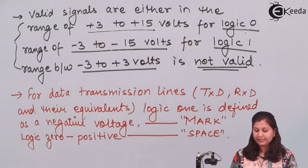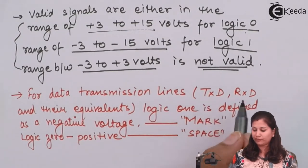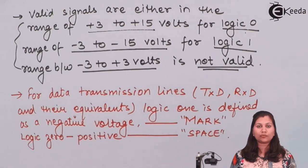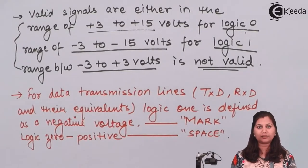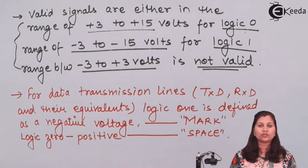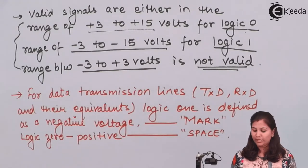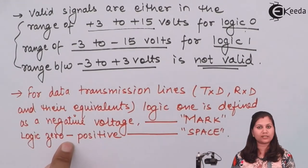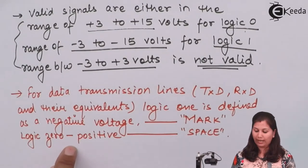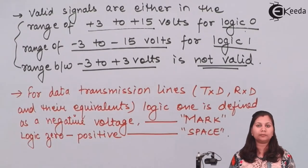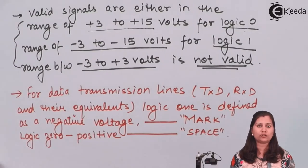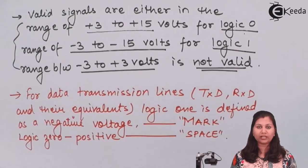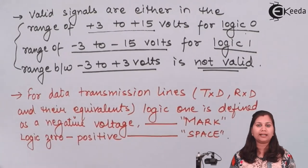For the data transmission lines (TXD and RXD), logic 1 is defined as a negative voltage and is called the mark condition, and logic 0 is defined as a positive voltage referred to as the space condition. So whenever we say mark in RS-232, it means negative voltage and logic 1 output; whenever we say space, that refers to logic 0 and a positive voltage. RS-232 is available in 25-pin, 9-pin, and 4-pin configurations.